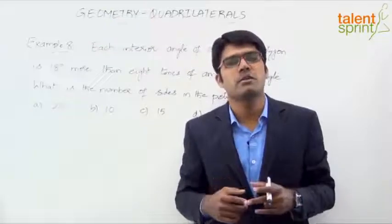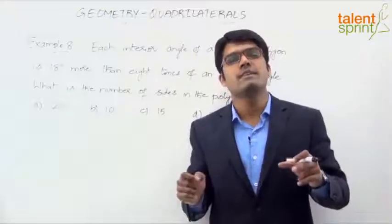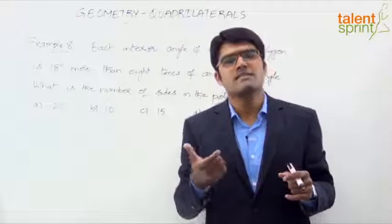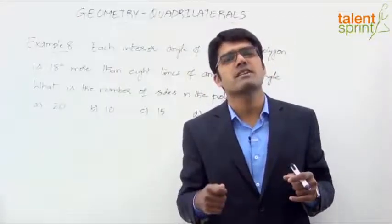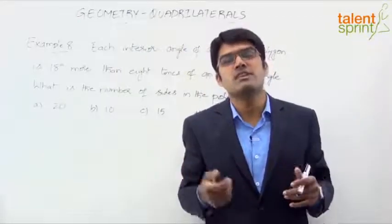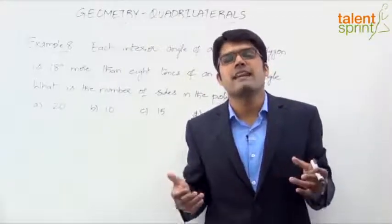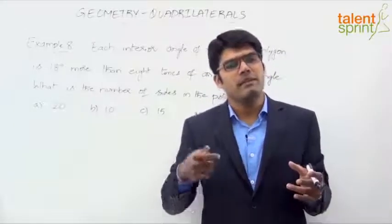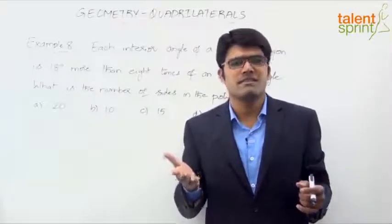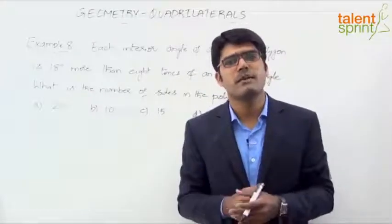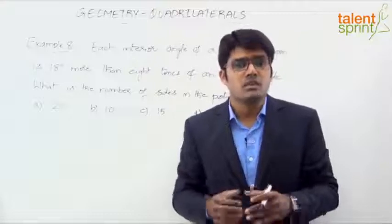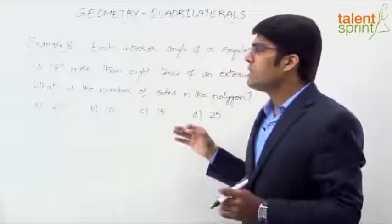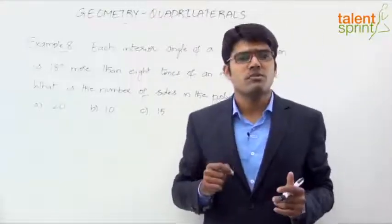In a regular polygon, each side is equal and each angle is equal. So total interior angle divided by the number of sides gives each interior angle. Each exterior angle equals 360 degrees divided by n. If you remember all these formulas, it will be very easy to solve questions based on polygons.